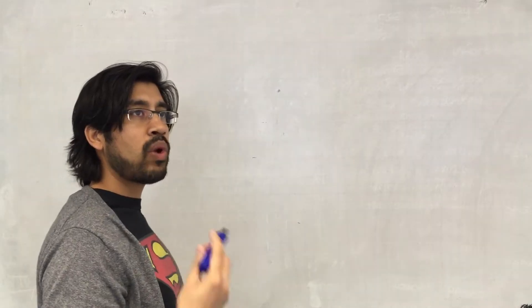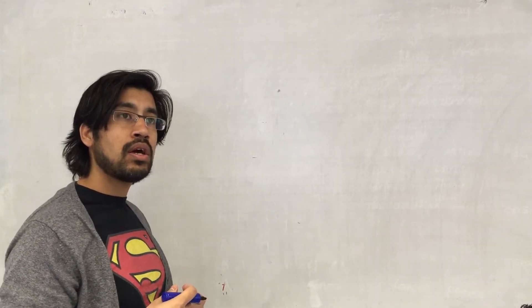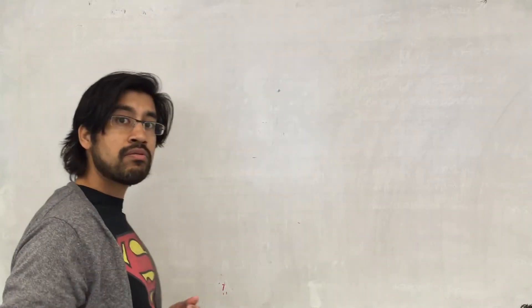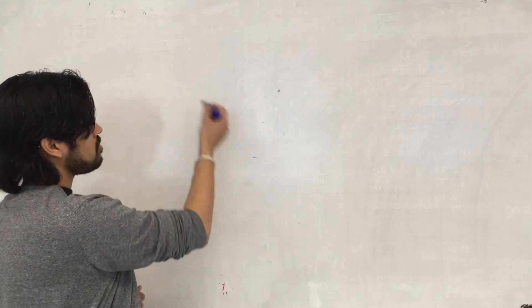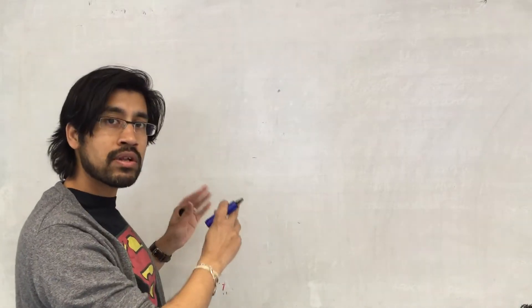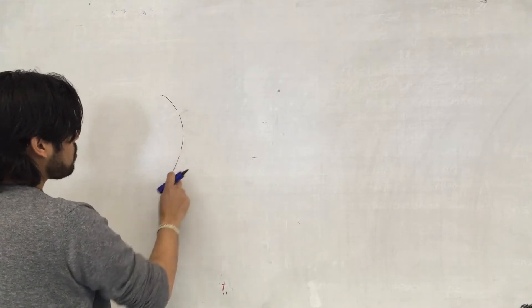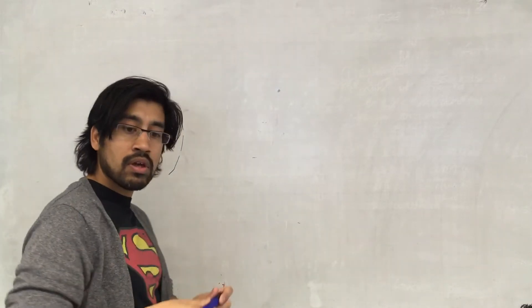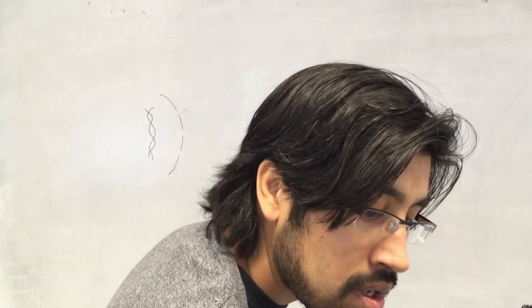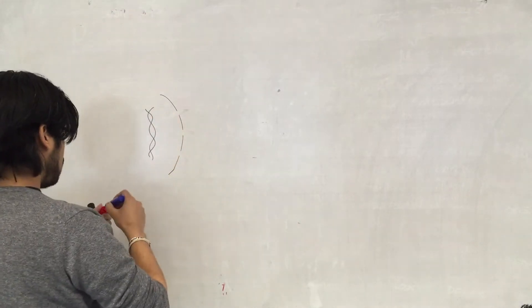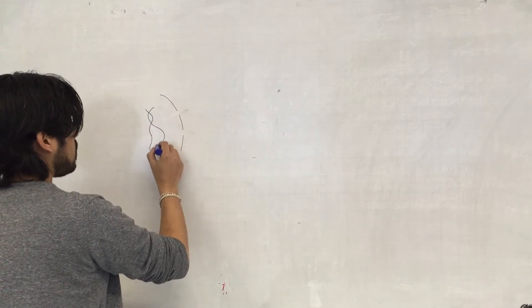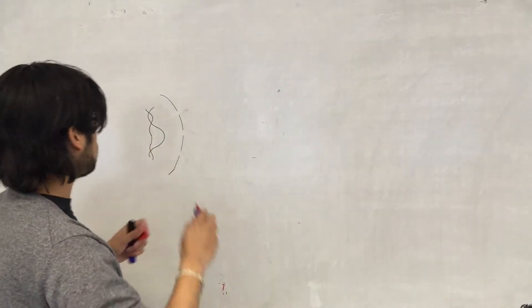Gene silencing is a way that gene expression can be negatively regulated. We also have positive gene regulation — for example, transcription factors. Let's remind ourselves what gene expression involves. We have the nucleus with nuclear pores, DNA in the nucleus, and RNA polymerase will transcribe a certain gene. The gene unwinds.